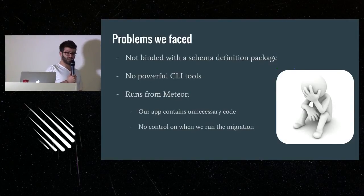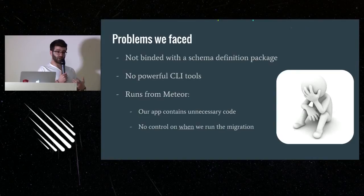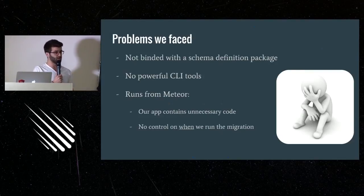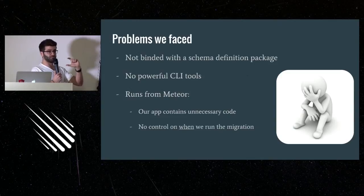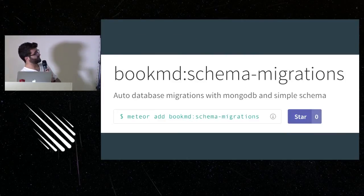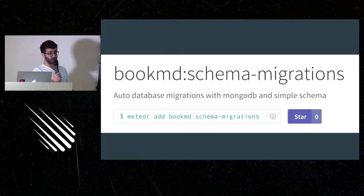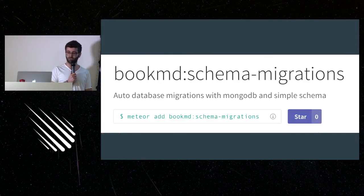Also, both packages run the migration code from inside Meteor. When we deploy our app the code is still there and it's unnecessary, because once we've migrated our data for a new version we don't need that code anymore. Usually what those packages do is run it inside a meteor.startup block, which runs every time you start your Meteor app — so again, no control over when the migration runs. So we decided to create our own package to get the best of everything. We use it in BookMD right now.